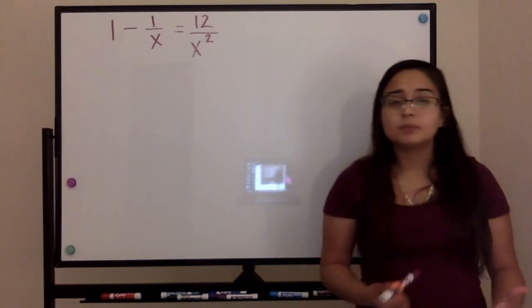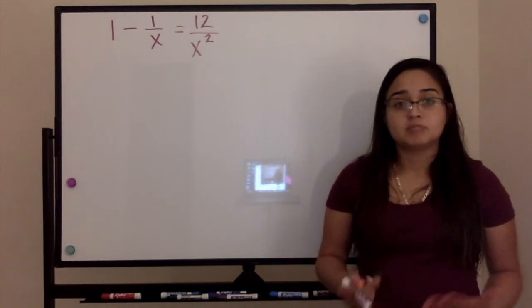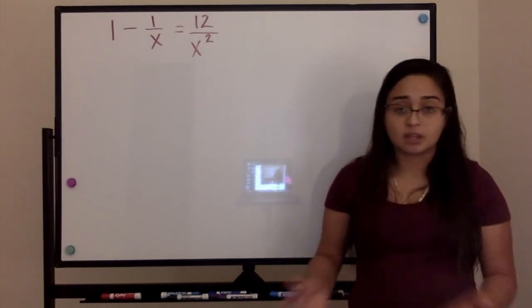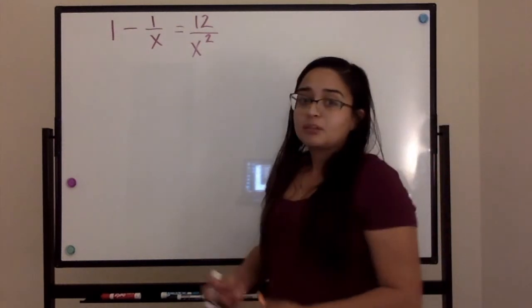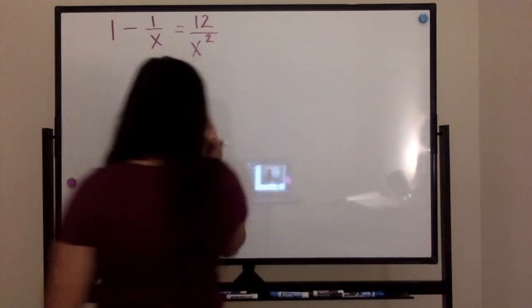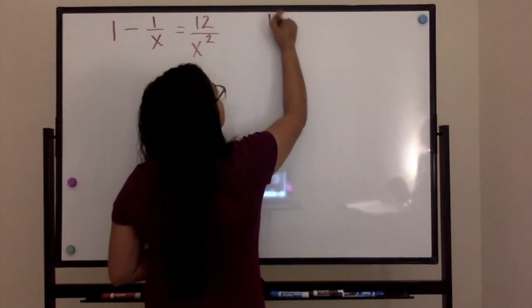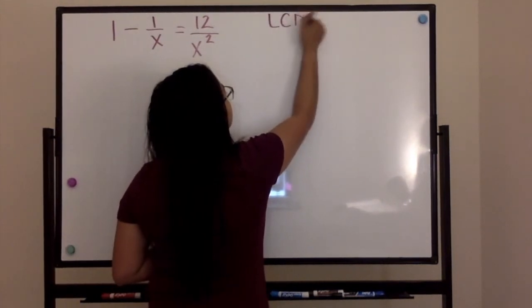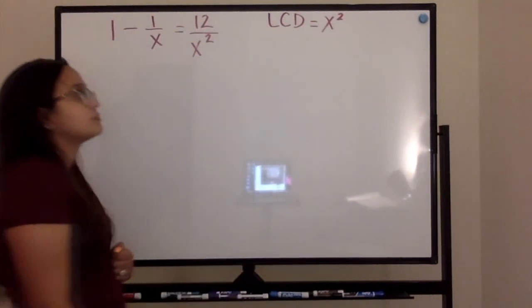So we would start this off like we would yesterday when we saw this concept for the first time. So we're going to start off by finding the LCD, which in this case would be x squared. So our lowest common denominator equal to x squared.